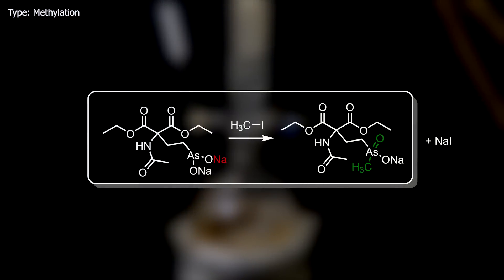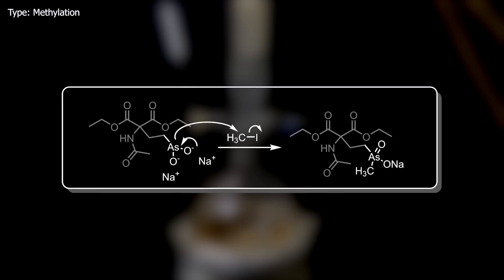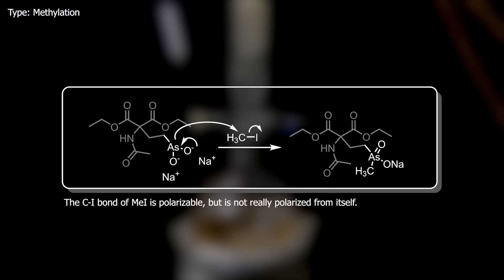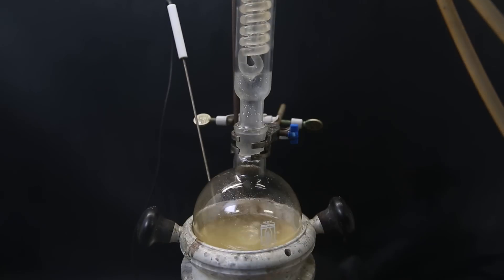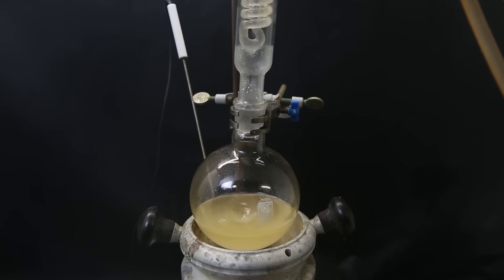In this reaction, the arsenic compound is methylated by methyl iodide and returns to its 5-plus oxidation state. A free electron pair from the arsenic attacks the electron-deficient carbon of the methyl iodide, kicking off the iodine. At the same time, an electron pair from one of the oxygens forms a double bond with the arsenic, resulting in the methylated arsenic compound along with sodium iodide. When I return, a precipitate has formed, which is probably just salts. I don't have to remove any of the salts since it doesn't matter for the next reaction.